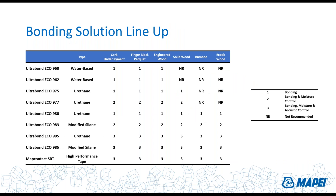To summarize the bonding lineup: water-based solutions are suitable for dry concrete and wood underlayments but limited to engineered wood flooring only. Urethane adhesives 975, 977, and 980 work on dry concrete and wood substrates up to about 5 lbs / 80% RH. Eco 983 and 977 are mid-range moisture control without acoustic advantage. For all three properties — bonding, moisture control, and acoustics — go with 995, 985, or SRT.